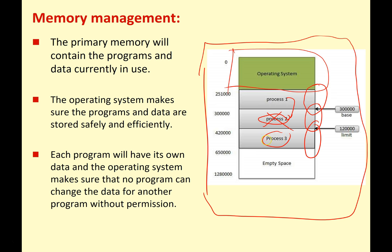It's also got to stop one process from being able to access the data of another process without permission, because this is when you get problems with malware and viruses. Older operating systems didn't have very good memory management — they would crash a lot. Rogue processes could overwrite and change the data of other programs and cause all kinds of problems. But nowadays, modern operating systems are much better at managing memory, and this means they crash a lot less.